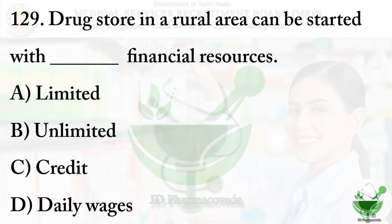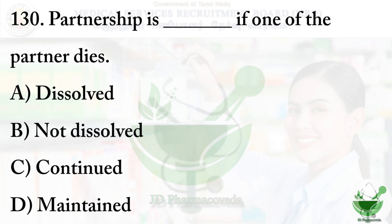Question 129: A drug store in a rural area can be started with what type of financial sources? Option A: limited, option B: unlimited, option C: credit, option D: daily wages. The right option is option A, limited. Question 130: Partnership is dissolved if one of the partners dies. Option A: dissolved, option B: not dissolved, option C: continued, option D: maintained. The right option is option A, dissolved. These kinds of questions are from the drugs management chapter, and we can expect two or three questions from that.